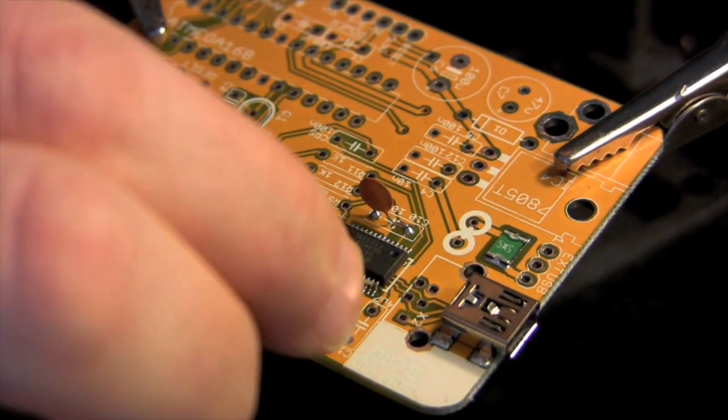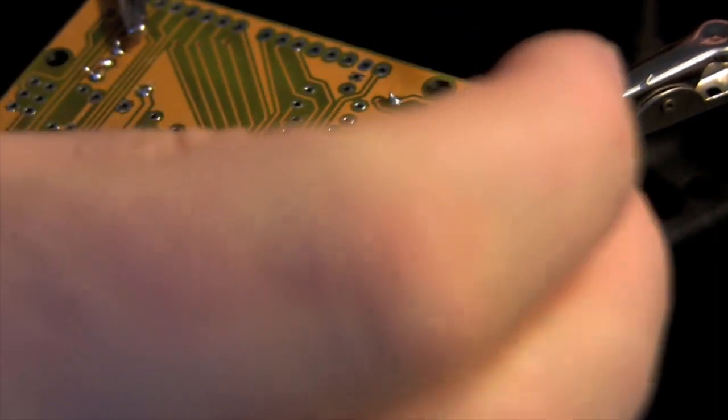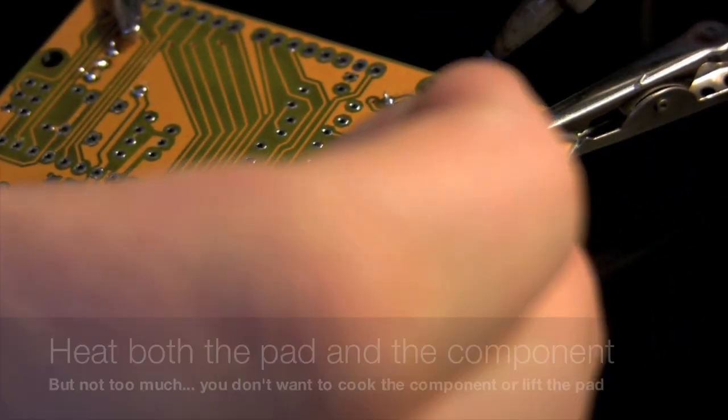Now I'll place the 4.7 microfarad capacitor. In my kit, it was actually sized correctly for the PCB. Bend the legs back, and solder.